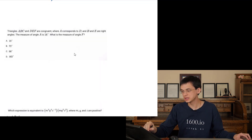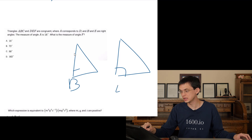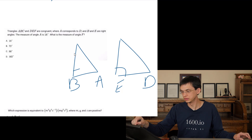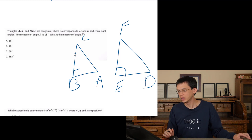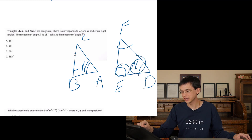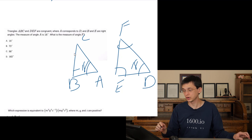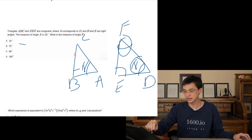Triangles ABC and DEF are congruent, so they're the same. Here's my picture — right angles. B and E are right angles. A corresponds to D. So angle A is equal to 18. What's angle F? We know angle D is 18. 18 plus 90 plus F has to add up to 180 degrees. So 18 plus what angle adds up to 90? 72.